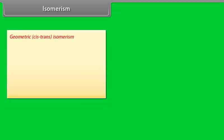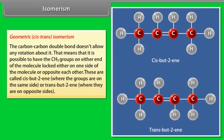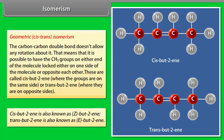Geometric cis-trans isomerism: the carbon-carbon double bond doesn't allow any rotation about it. That means that it is possible to have the CH3 groups on either end of the molecule locked either on one side or opposite each other. These are called cis-but-2-ene, where the groups are on the same side, or trans-but-2-ene, where they are on opposite sides. Cis-but-2-ene is also known as Z-but-2-ene, and trans-but-2-ene is also known as E-but-2-ene.